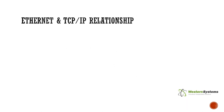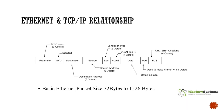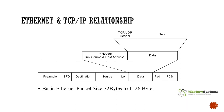Here is the Ethernet frame. To understand how network switches do what they do, we need to understand how it relates to TCP/IP. The MAC address is here in the frame header, and the IP header is actually in the payload. Layers one and two are defined in the outer frame, and layers three through seven are all in the payload.